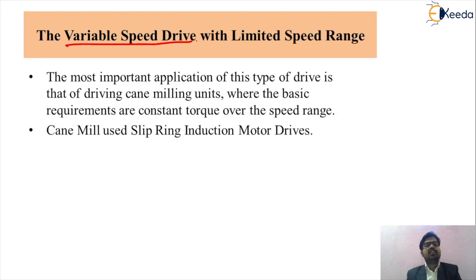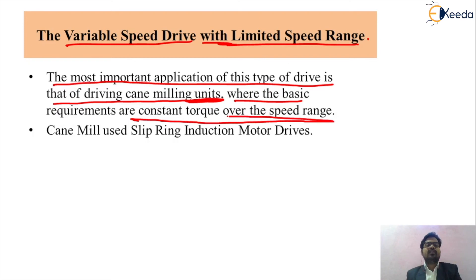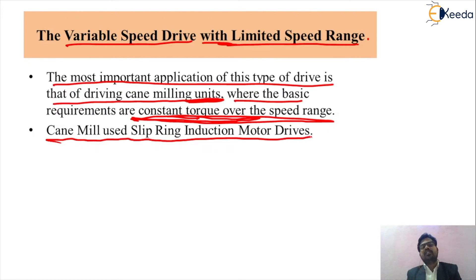Variable speed drive with limited speed range is most importantly applied to the cane milling unit. In the cane mill, juice must be extracted from the sugar cane, requiring constant torque over a wide speed range. The cane mill therefore uses a slip ring induction motor drive, as previously discussed.